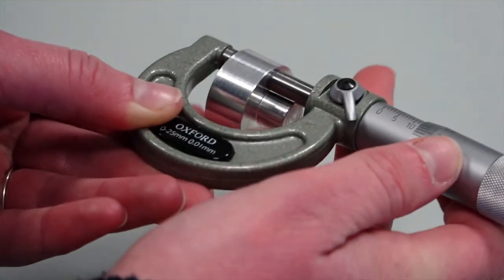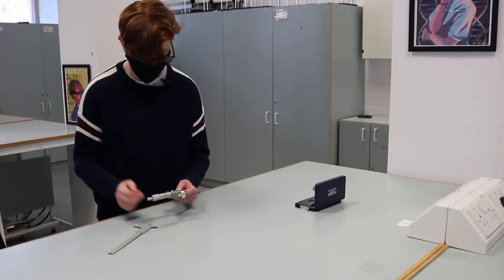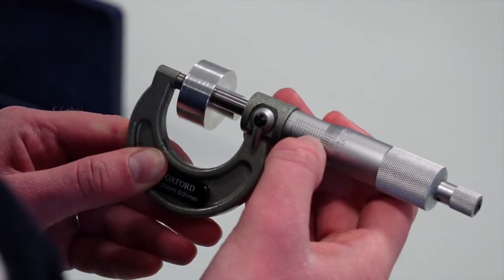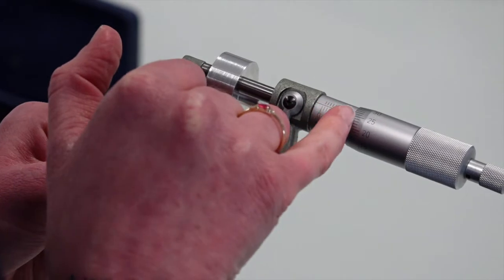Here is another example of reading the screw gauge. On the main scale, the tick marks on the bottom are 1mm each, and the ticks on the top are 0.5mm each.